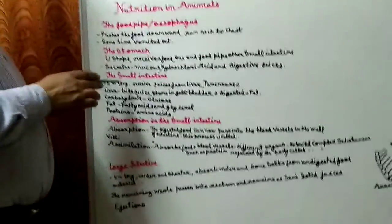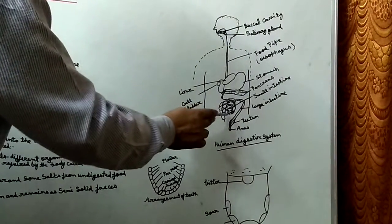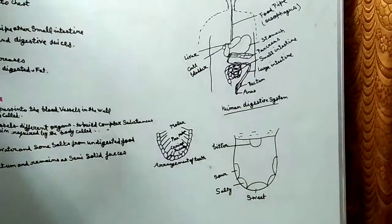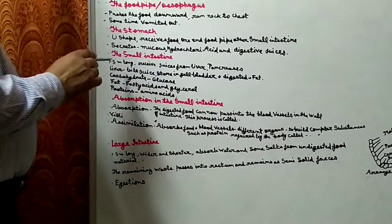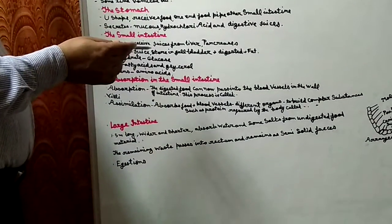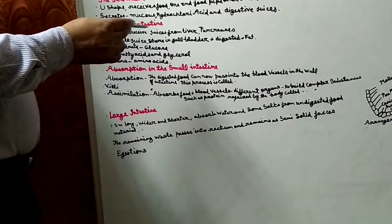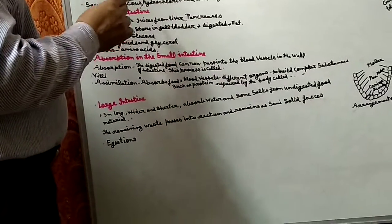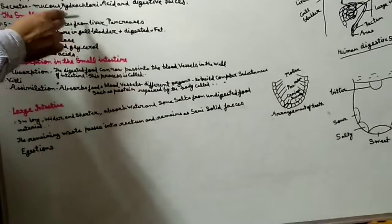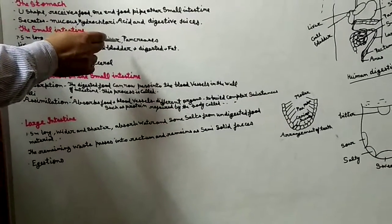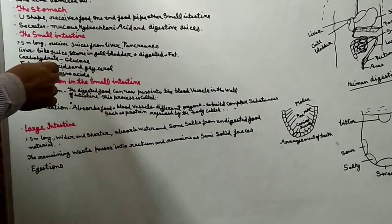Next is the small intestine. Yeh wali chhoti chhoti jo bahut coiled naali hoti hai, 7.5 meter long hoti hai - kaafi lambi hoti hai. It receives juices from different parts such as the liver and pancreas. Jo liver ke dwara juice paida hote hain, wo isi mein aate hain - small intestine mein. Pancreas se jo juice paida hote hain, wo bhi sab small intestine mein hote hain.